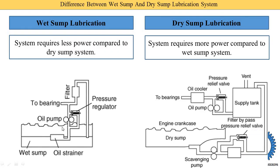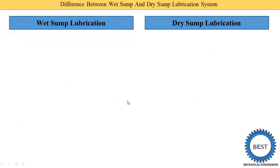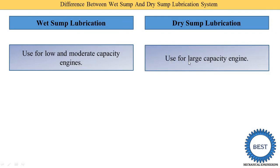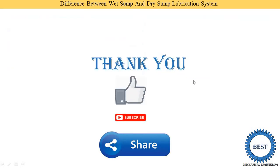The dry sump lubrication system requires more power compared to the wet sump system. As you can see in this image, the wet sump system uses only one pump, while the dry sump system uses two pumps — one scavenging pump and one oil pump — which absorbs more power. Finally, the wet sump lubrication system is used for low and moderate capacity engines, whereas the dry sump is used for larger capacity engines.